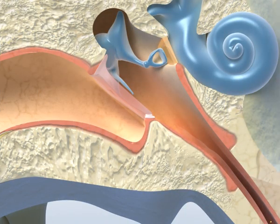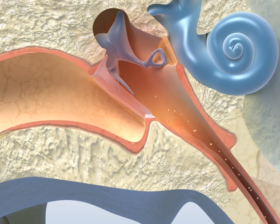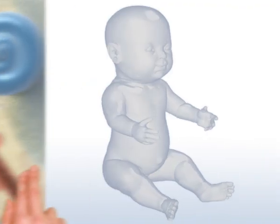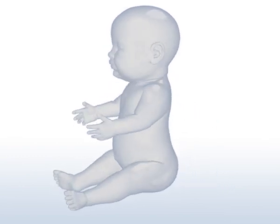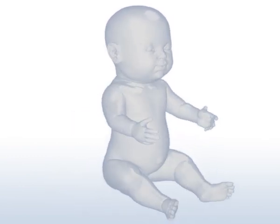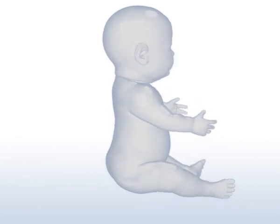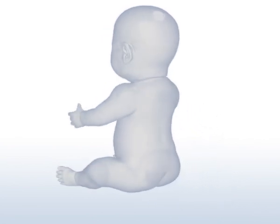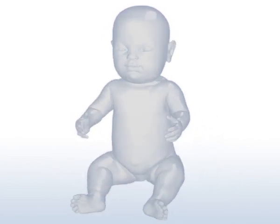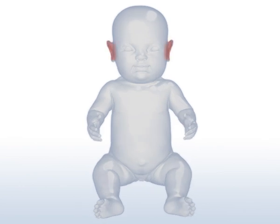The auditory tube does have one disadvantage. When you have a cold, for example, it allows germs from the nose and throat area to enter the middle ear, where they can cause an infection. Babies and young children still have a very short auditory tube. This makes it easier for germs to enter the middle ear from the nose and throat area, where they can cause a painful inflammation, which is quite common in young children.